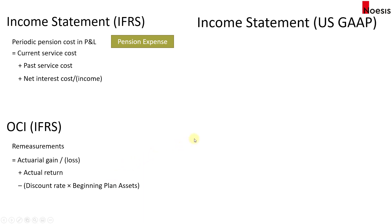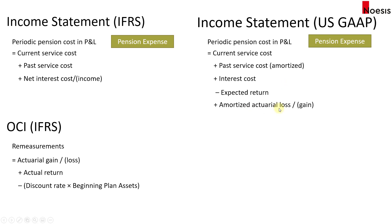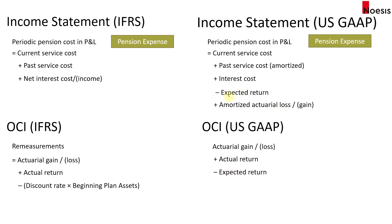Under US GAAP, the periodic pension cost in the P&L covers the current service cost — same as IFRS. The difference is that past service cost is first recognized in OCI, then amortized to the P&L. We add interest cost (not net), minus the expected return, then add in the amortized actual loss or gain using the corridor approach. Under US GAAP OCI, we have the actual gain or loss (a portion of which may be amortized to the income statement), the actual return minus expected return, and the unamortized past service cost.